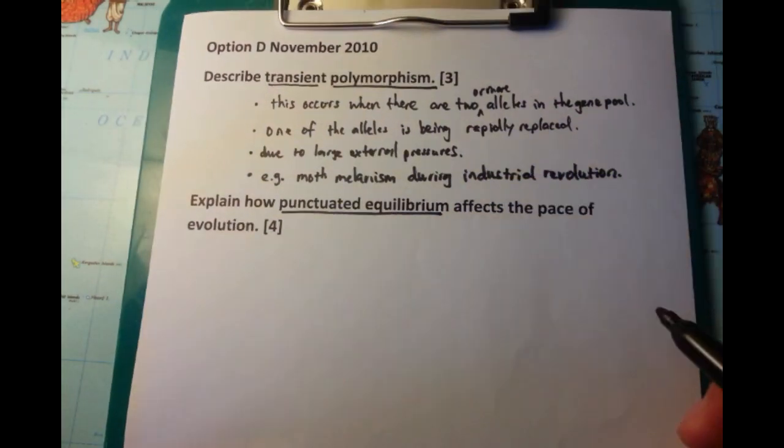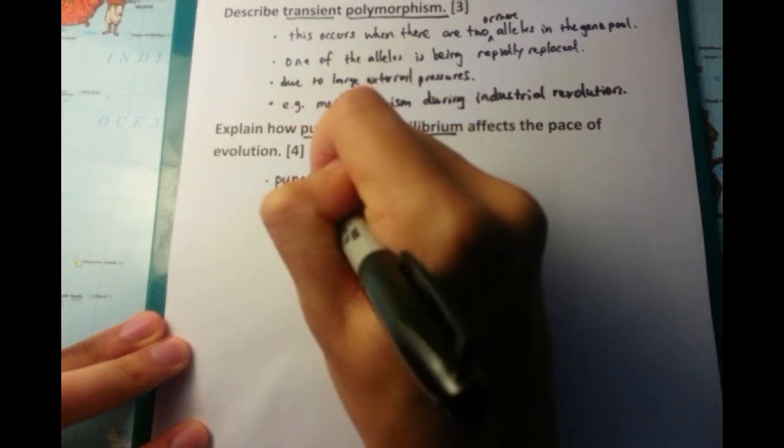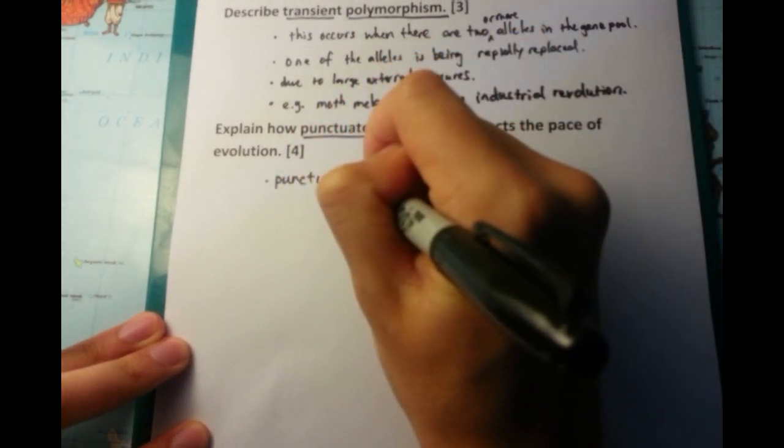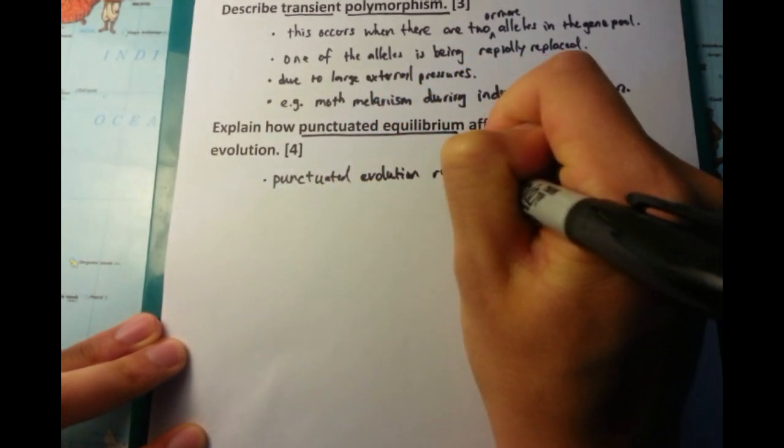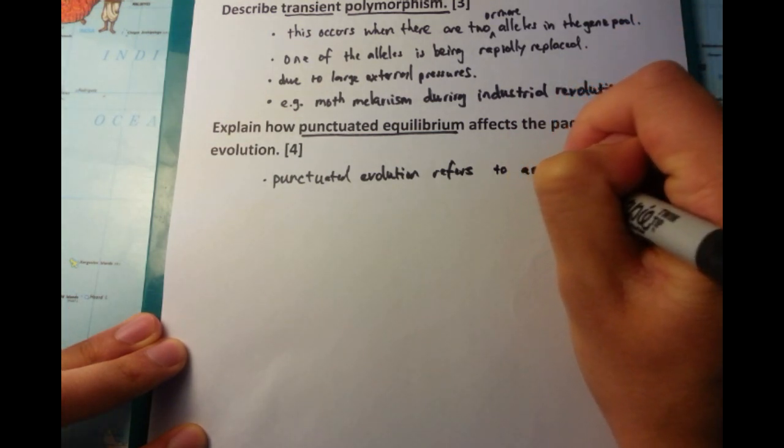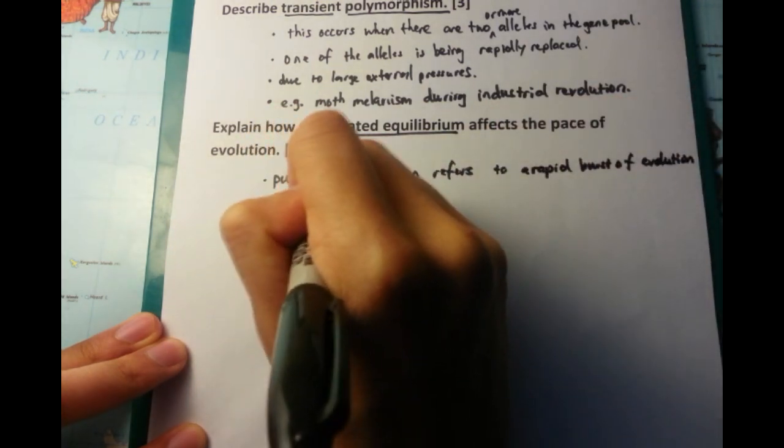Now, the second question we're going to talk about is punctuated equilibrium, affecting the pace of evolution. Punctuated, you think of stop and start. Punctuated evolution refers to a rapid burst of evolution, followed by periods of stability. So you've got lots of evolution, and then you have a quiescent period where there is limited evolution.